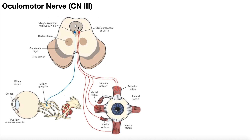Cranial nerves 3 and 4 originate in the midbrain — 4 being the trochlear nerve, which will be two videos from now. So cranial nerve 3 is associated with two components, two separate nuclei.